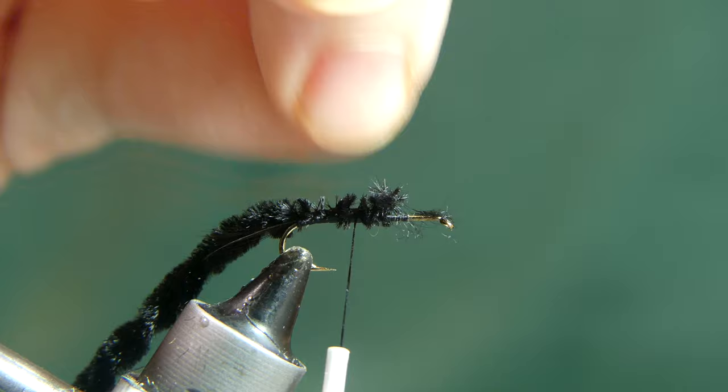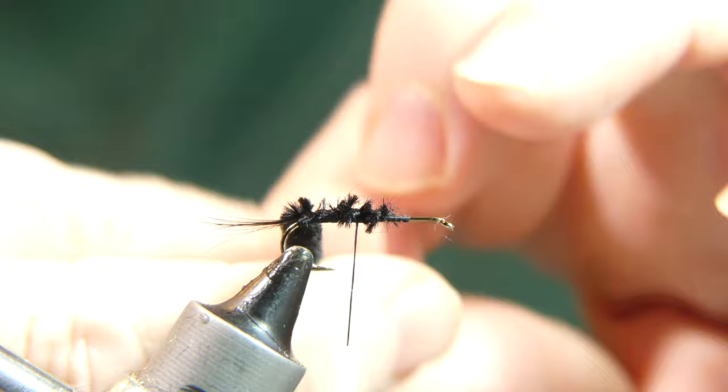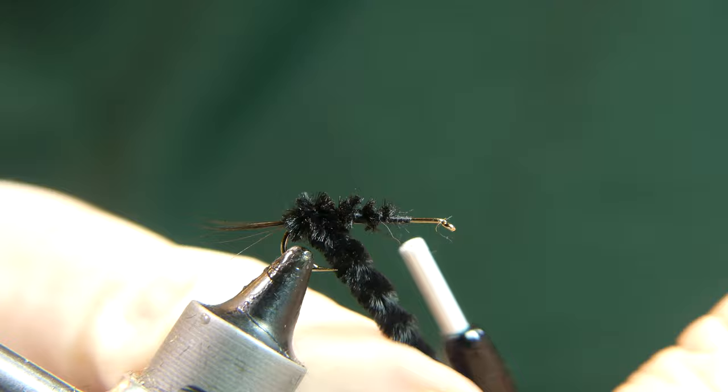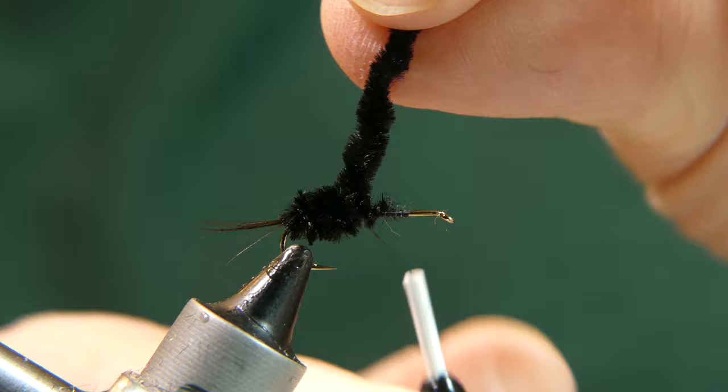Trim off any excess so the fly doesn't look straggly. Now you can take the chenille and wrap it back forward to about the midpoint of the hook and tie it off. It's very important that you don't wrap the chenille too far forward. It's very easy to crowd the eye of the hook when you're trying to finish this fly up.